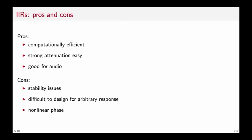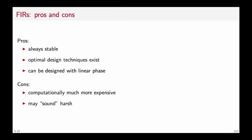To answer the first question, we consider the pros and cons of each design. IIRs are computationally efficient, they can achieve very strong attenuation in the stop band rather easily, and they're good for audio because they can achieve a monotonic characteristic in the passband. On the other hand, they might have stability issues especially in numerical implementations prone to overflow or underflow, they're difficult to design for arbitrary responses — a low-pass or high-pass is easy, but an arbitrary response is not — and they have nonlinear phase. FIRs, on the other hand, are always stable, they can be designed optimally, and they can be designed with linear phase, which is a great advantage especially for communication systems. On the other hand, they're computationally more expensive, and acoustically they might sound harsh sometimes.